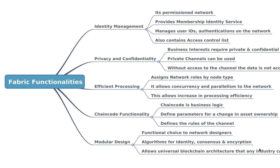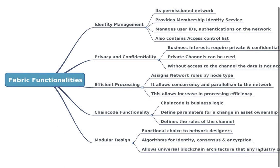It also has an access control list that can be used to provide additional layers of permission through authorization of specific network operations. For example, we can permit an ID to invoke a chain code application but block it from deploying a new chain code. This is how identity management can be organized in Hyperledger Fabric.